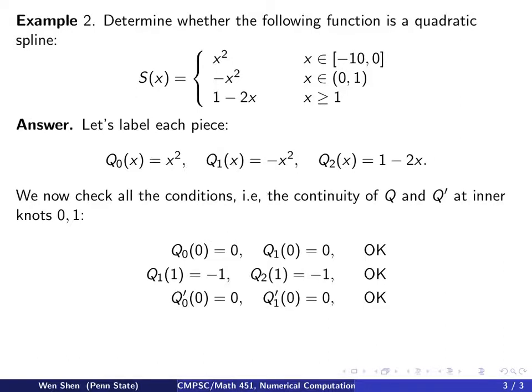Now let's check the derivatives. Q'(0) from the left: differentiate Q₀ to get 2x, evaluate at x = 0 to get 0. From the right, differentiate Q₁ to get -2x, evaluate at x = 0 to get 0. That's okay because 0 = 0.